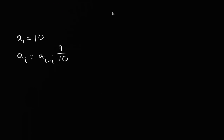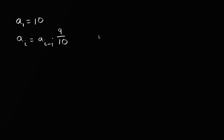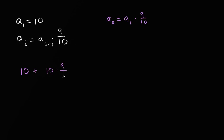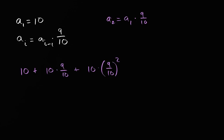Let's do one more. Here we have a series defined recursively, so it's useful to think about what it actually looks like. The first term is 10. The second term, a sub two, equals a sub one times 9 tenths — so it's 10 times 9 over 10. The third term is the second term times 9 tenths, so 10 times 9 over 10 squared. As written, it hasn't yet been expressed as a finite geometric series.